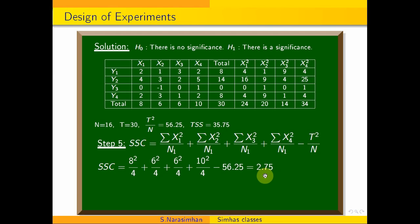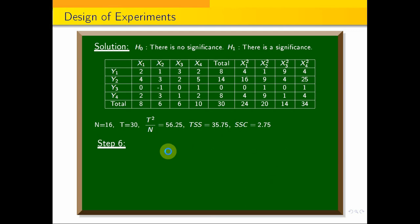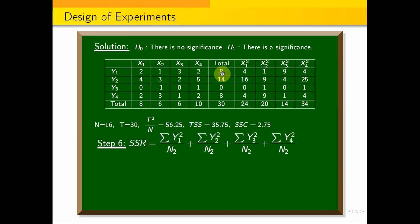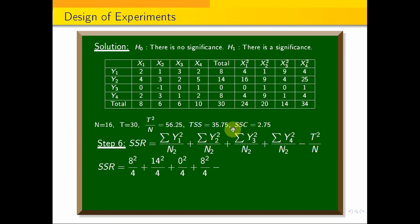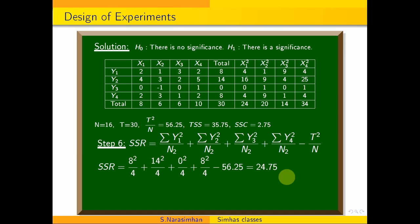SSR equals: (y1 squared by n) plus (y2 squared by n) plus (y3 squared by n) plus (y4 squared by n), minus T squared by n. That is: (8 squared by 4) plus (14 squared by 4) plus (0 squared by 4) plus (8 squared by 4), minus 56.25. We get SSR equals 24.75.